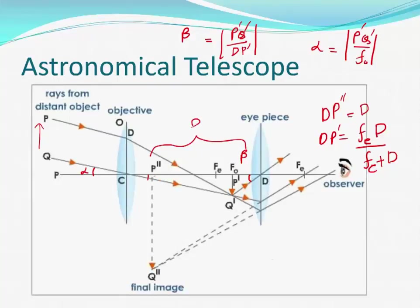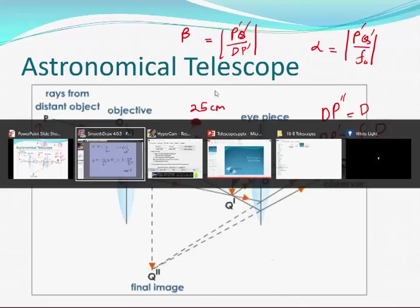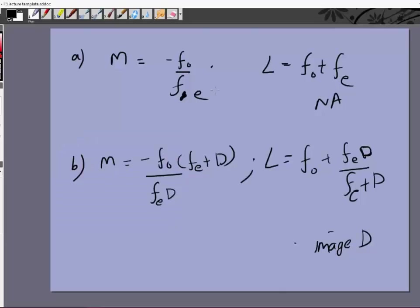Note that this D — the near point — is 25 centimeters, and it is a different quantity from the label D used elsewhere. You can see that when the image is at the least distance of distinct vision, the magnification is greater, but the eyes have to be more strained.